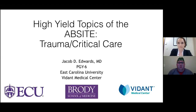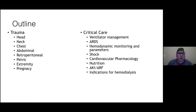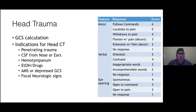I'm going to be covering trauma and critical care pretty quickly. We're going to cover trauma via a region-based approach and critical care via a systems-based approach. For head trauma, they don't necessarily ask us to calculate a GCS as part of an answer, but you usually have to calculate it to get to an answer for treatment or intervention. Indications for a head CT include a depressed GCS, penetrating injury, physical exam findings of CSF from the nose or ears, hemotympanum, or if the patient is altered due to drugs or alcohol.